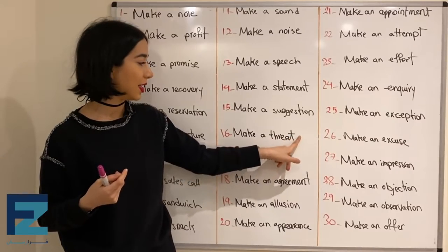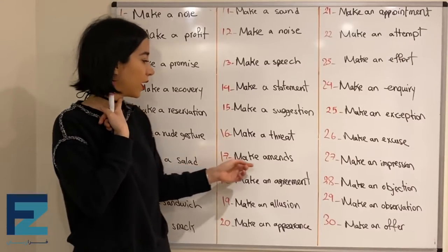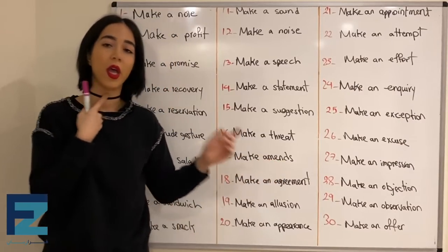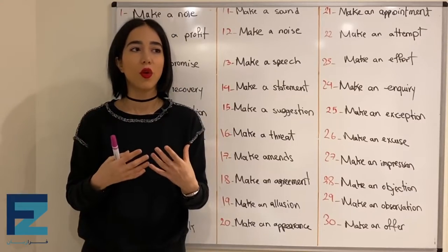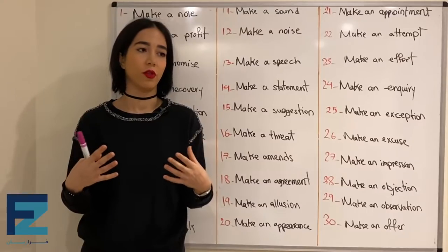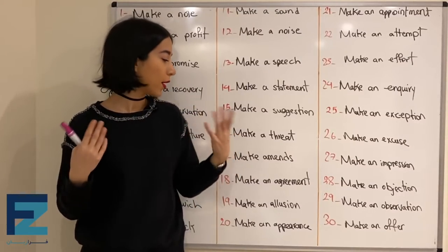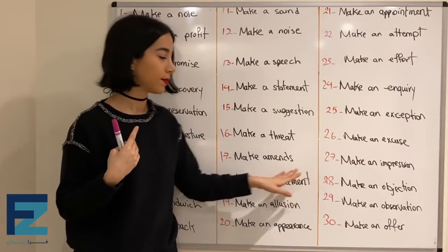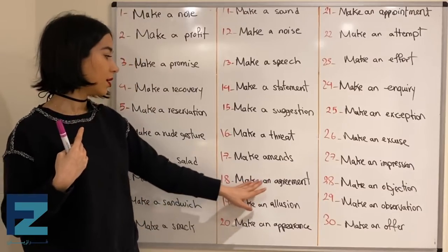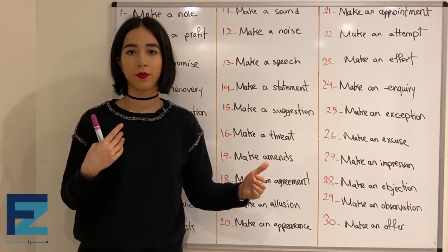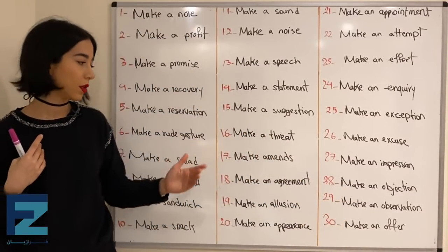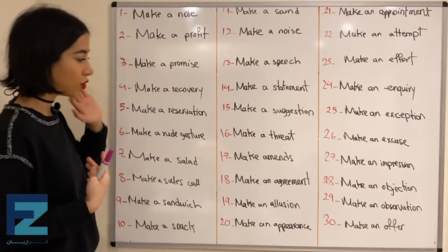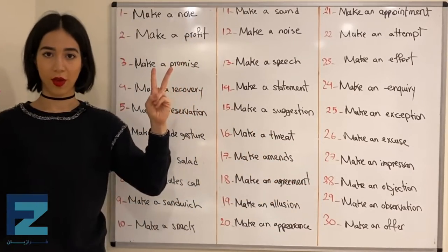Number seventeen: make amends. Make amends means to do something to show that you're sorry for something that has happened — جبران کردن، نشون دادن که پشیمونی. Number eighteen: make an agreement — to agree on something with somebody, با یک کسی به موافقت رسیدن.